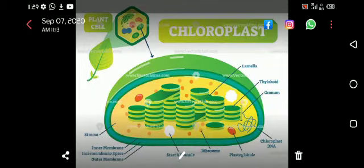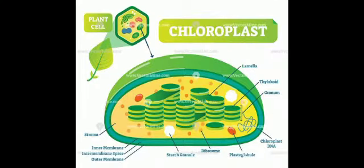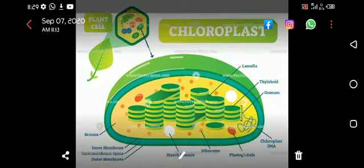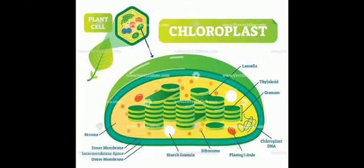Chloroplasts are a bit independent because they have their own DNA and ribosomes, just like mitochondria. The thylakoid is the site where the pigment chlorophyll is present, and chlorophyll is actually the pigment which carries on photosynthesis.